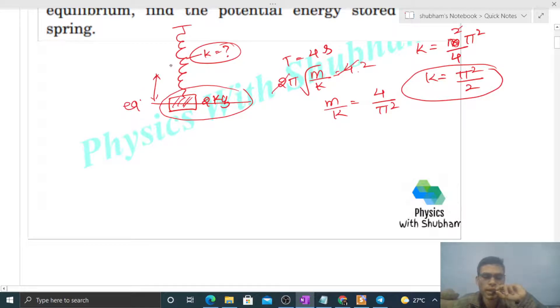And at that time, the spring will have some elongation. Let's say elongation in the spring at equilibrium is x₀. So net force on the block should be equal to zero, means mg equals k into x₀.